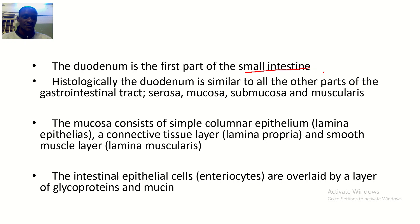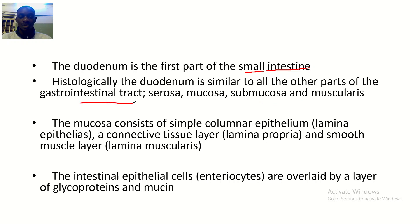The duodenum is the first part of the small intestine. Histologically, the duodenum is similar to other parts of the gastrointestinal tract, having a serosa, mucosa, submucosa, and muscularis.